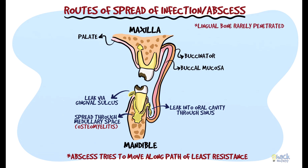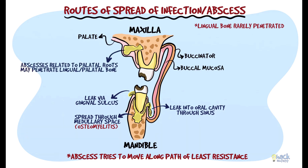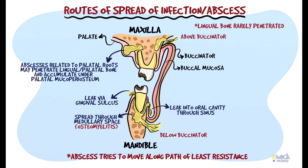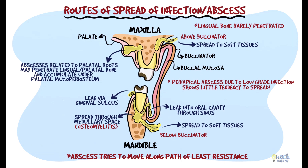The lingual cortical plates are rarely penetrated. Abscess in the maxilla, particularly related to the lateral incisors and palatal roots of molars and premolars, may penetrate the palatal or lingual cortex and accumulate under the palatal mucoperiosteum causing palatal swellings. Also, abscess in the molar regions may penetrate the buccal cortex below or above the attachments of the buccinator muscle and spread into soft tissues of the face and neck. However, those abscesses arising from chronic lesions due to persistent low-grade infections are usually localized and show little tendency to spread.